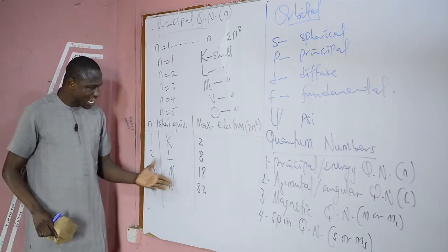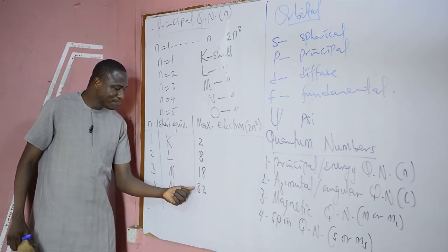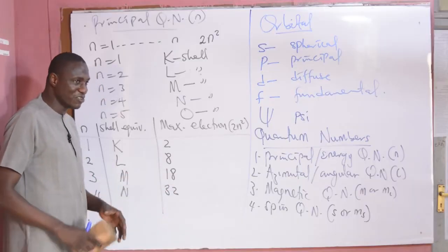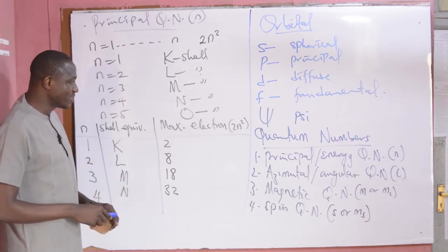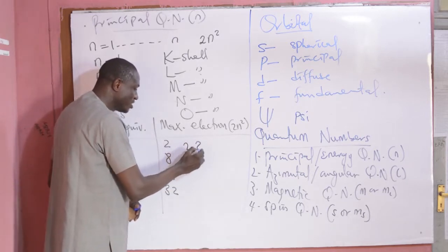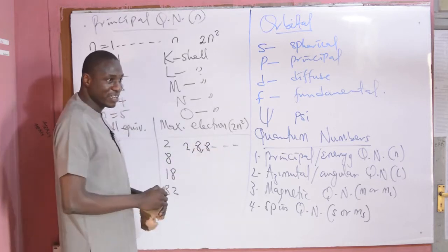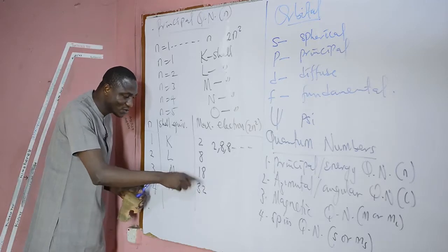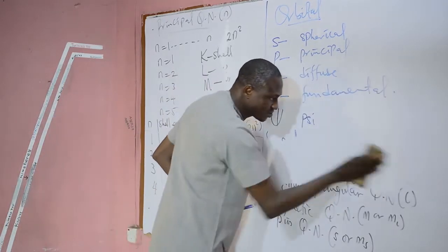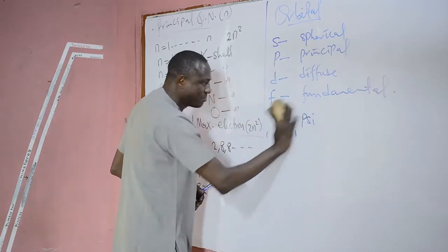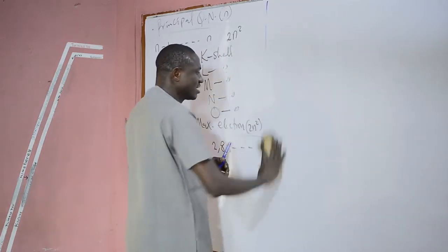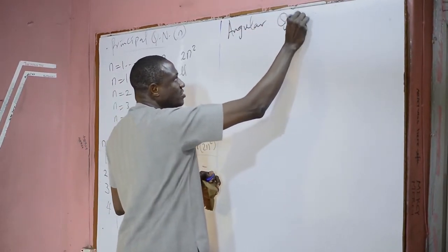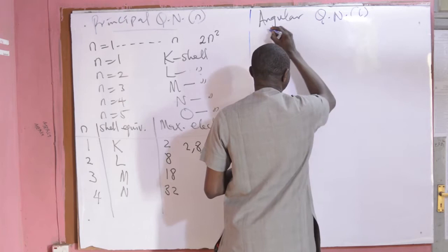But you may be surprised that a particular shell in an atom takes up to 32 electrons, especially when you know that writing electronic configurations for the first 20 elements you normally write 2, 8, 8, and so on. So the other quantum numbers are going to tell us why a particular shell holds up to 32 electrons. Let's go to the second quantum number, which is the azimuthal, subsidiary, or angular quantum number, represented as L.